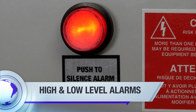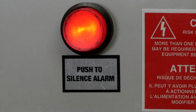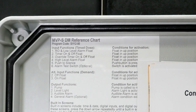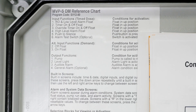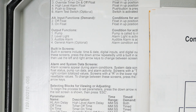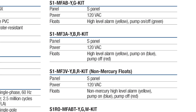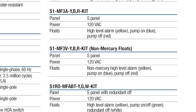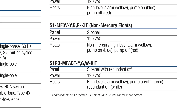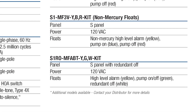High and low level alarms serve as a warning and are an integral part of the Orenco control panels. While every MVP and VCOM panel has a high level alarm, not every electromechanical panel has a low level alarm. Please check to see whether your panel has a low level alarm. If the panel model number contains the letters RO, your panel includes a low level alarm. If it does not, then all alarms will be high level alarms.